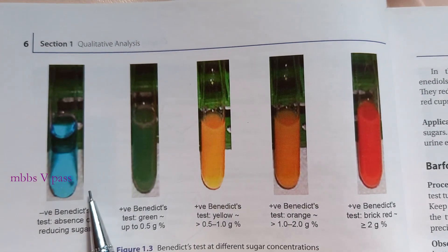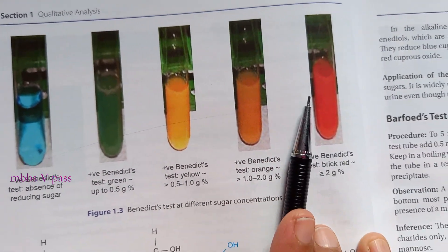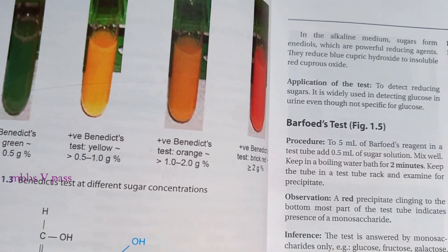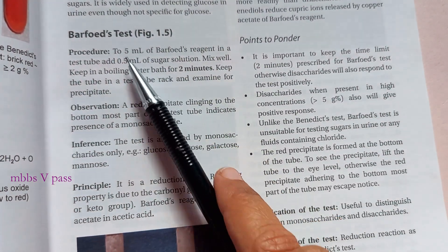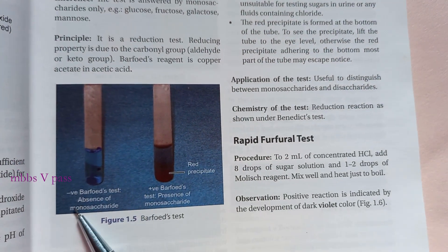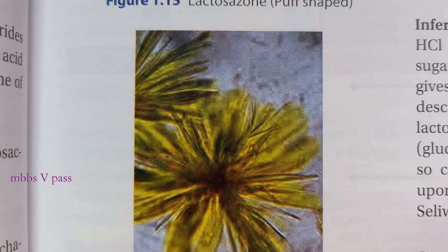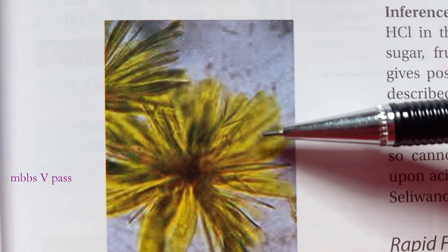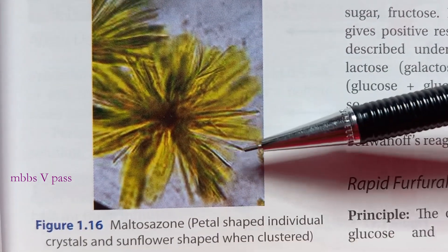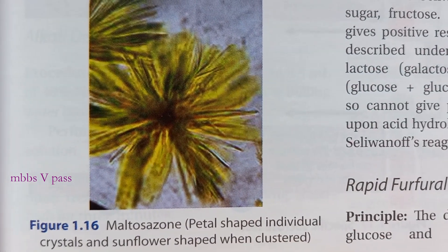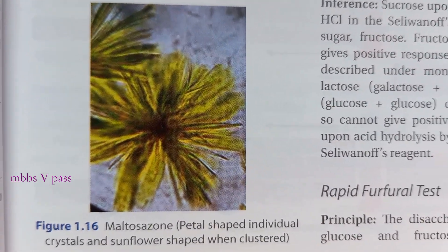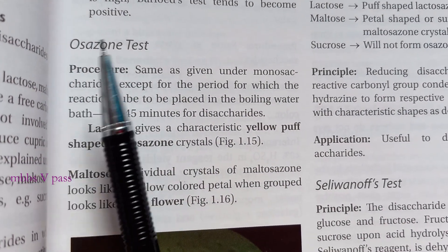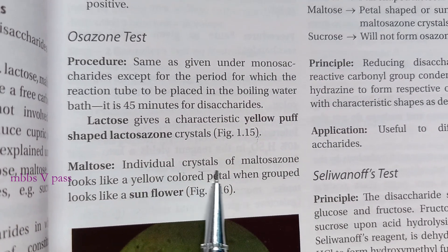Here you have your test for glucose — Benedict's test. And what is Barford's test? Barford's test is about monosaccharides. Crystal structure of which carbohydrate? Maltose. This is called the Osazone test. Do you remember all this? Crystals.